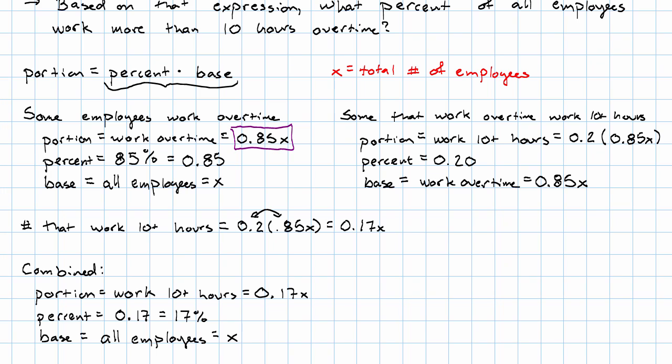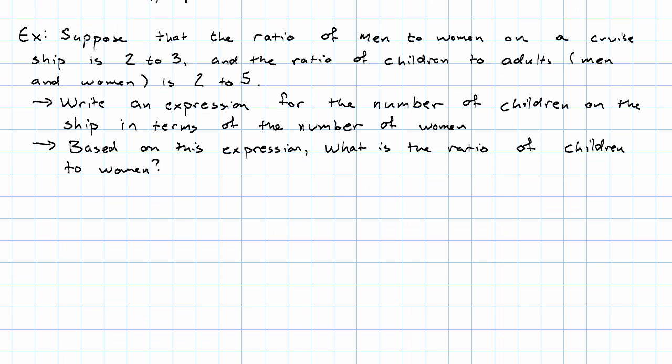Let's see another example where we're given a ratio rather than a percent. Suppose that the ratio of men to women on a cruise ship is 2 to 3, and the ratio of children to adults — that is, men and women — is 2 to 5. Write an expression for the number of children on the ship in terms of the number of women, and then based on that expression, determine what the ratio of children to women is.